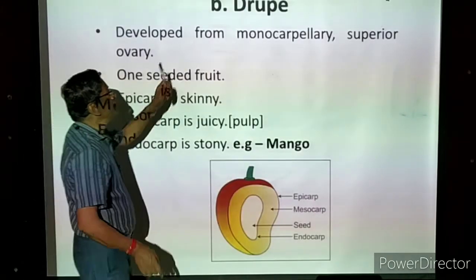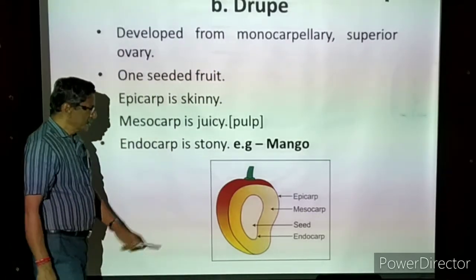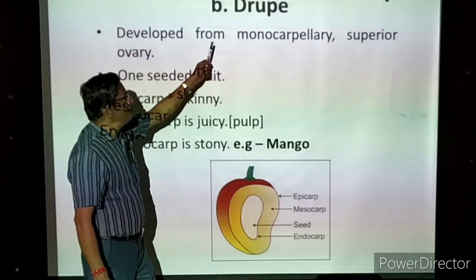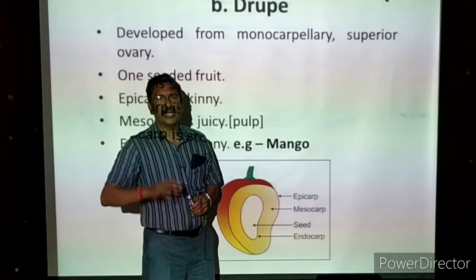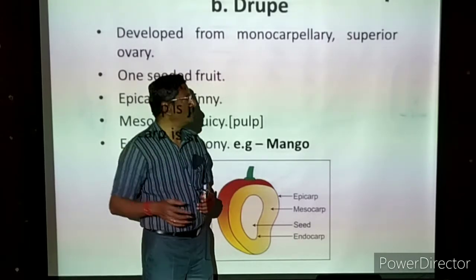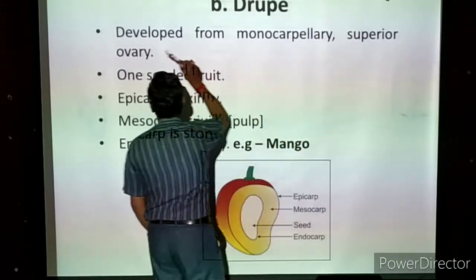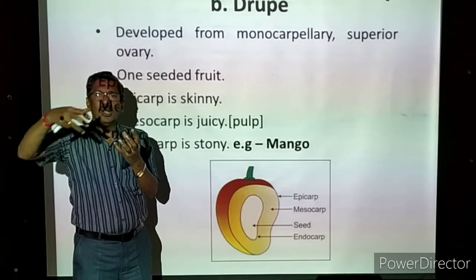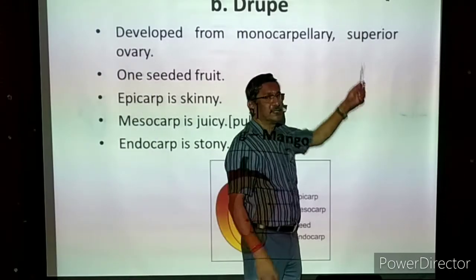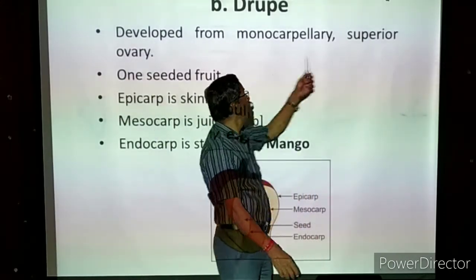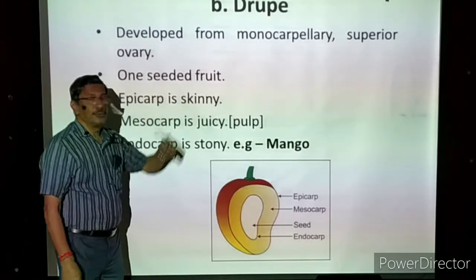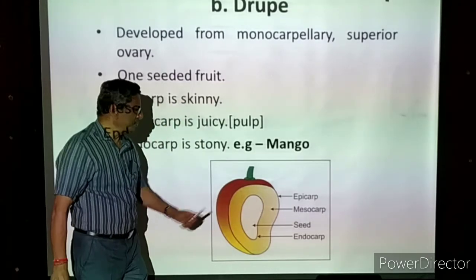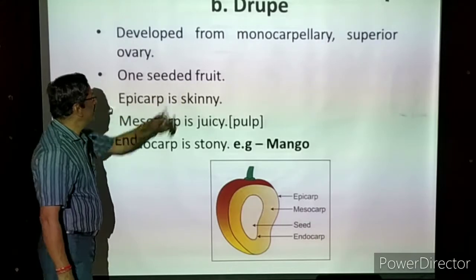The second type of simple fleshy fruit is called a drupe. The best example is mango. This fruit is developed from a monocarpellary ovary — compulsorily only one carpel is present in the ovary; no bi, tri, or tetra. It is a monocarpellary superior ovary. Superior ovary means the ovary is situated above all other floral parts. It is a one-seeded fruit — if you cut the mango at the center, only one whitish seed will be there.